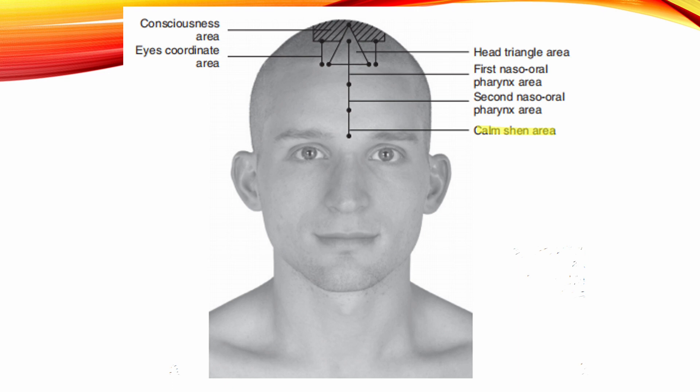Calm Sun Area. Location: 2 cm in length, extending superiorly from the Yin Tang point. Indication: Sun disturbances.